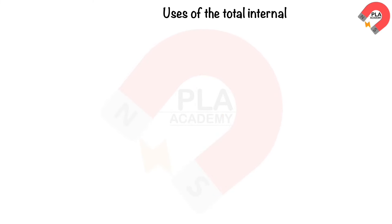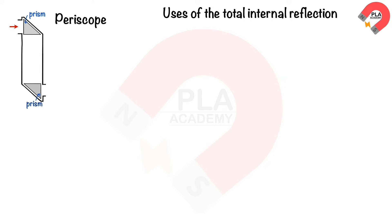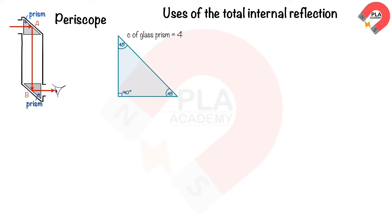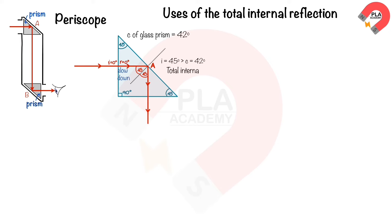Uses of total internal reflection. A periscope consisting of glass prisms is used in submarines. As a light ray travels through the periscope, total internal reflection occurs at points A and B. The glass right-angle prism has a 45° angle, and the critical angle of glass is about 42°. The light ray enters from air to glass at 0° incidence, slows down but does not change direction, then reflects at point A with an incident angle of 45° — greater than the critical angle — causing total internal reflection.